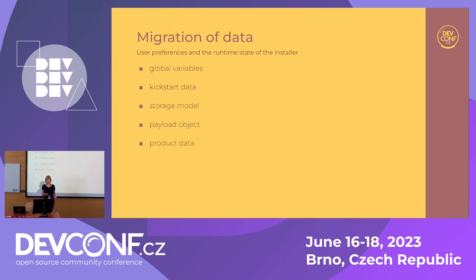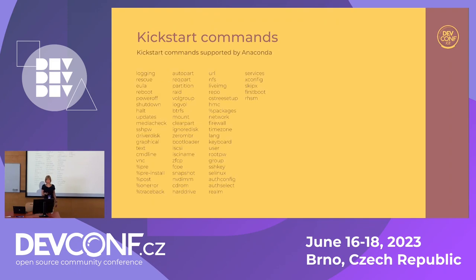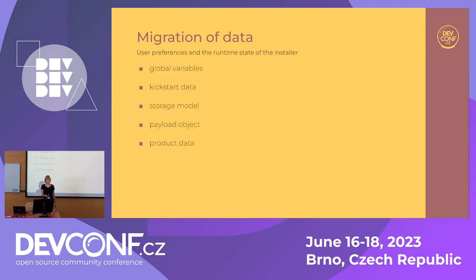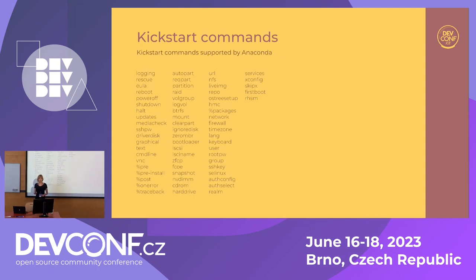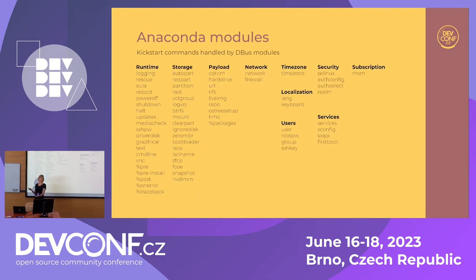Then we had a representation of the payload object — by payload we mean all the support needed for installing software on your system. And there's a special category of product data where every product can have slightly different defaults to show users. The most problematic part was actually the Kickstart data, so we decided to start planning around that. We collected all the Kickstart commands supported by Anaconda, split them into areas that made sense, and this became the foundation of the DBus modules. You finally have something to work on with very clear goals — just go module by module, command by command.